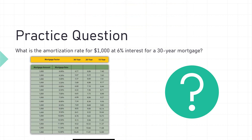On your real estate exam, you may be asked this type of question: What is the amortization rate for $1,000 at 6% interest for a 30-year mortgage? You can look it up in the table and discover that the factor is $6 per month. That factor is the amount of money it takes per month to pay off principal and interest on a $1,000 loan over 30 years.